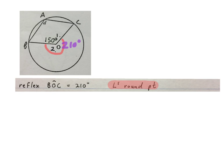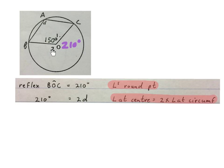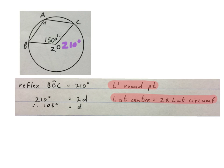In place of writing reflex BOC you can also number these angles O1 and O2. We know that 210 degrees is twice as big as angle D, so we write 210 equals 2D — angle at centre is twice the angle at circumference. We divide both sides by 2 and get D equals 105 degrees, which I like to write in on my sketch.